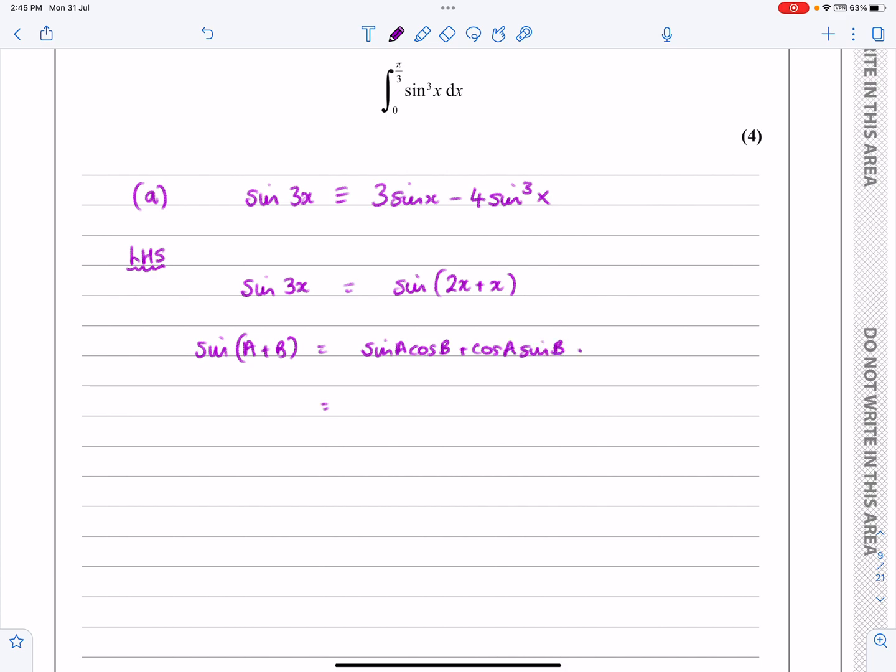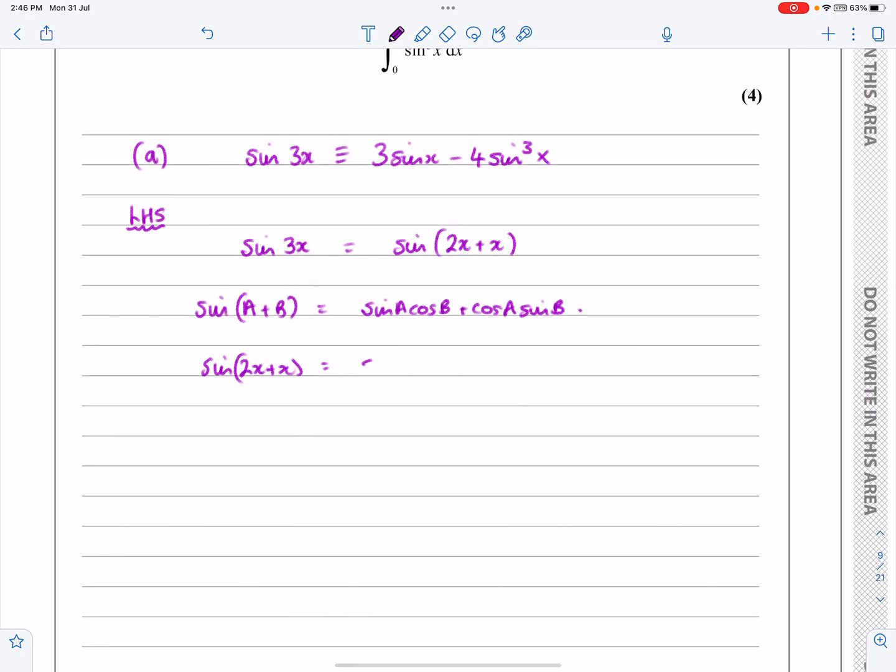If I'm doing that with sine 2x plus x, anywhere where there's an A you put 2x, anywhere where there's a B you put x. So this is going to be sine 2x cos x plus cos 2x sin x.